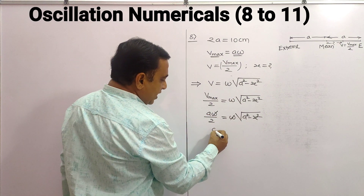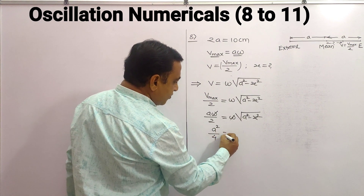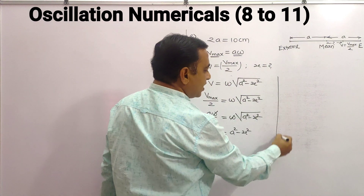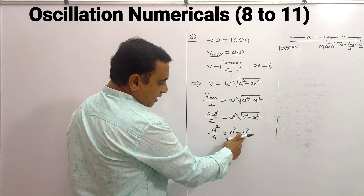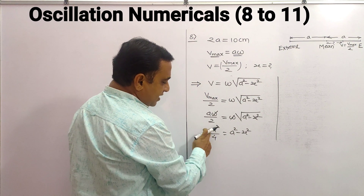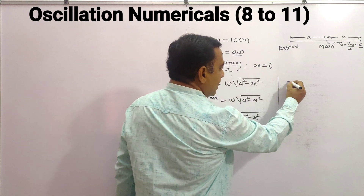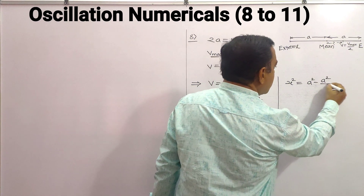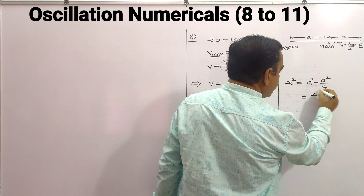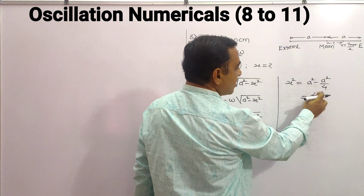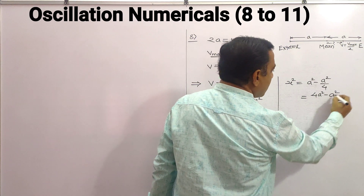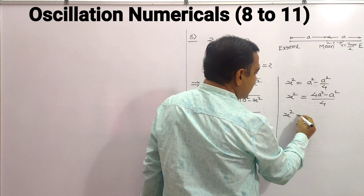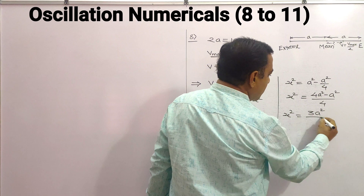After squaring both sides, we get a²/4 = a² - x². Rearranging, x² = a² - a²/4. Taking cross multiplication: x² = (4a² - a²)/4, so x² = 3a²/4.